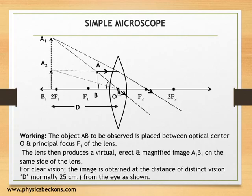For comparison of object size and image size, the angular sizes, we take the object also at same distance, that is distance of distinction. So A to B, this A to B₁, is the object AB shifted to distance D.